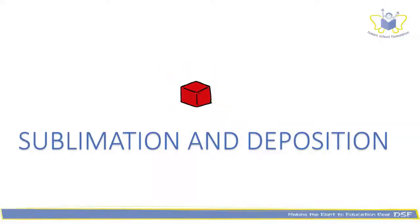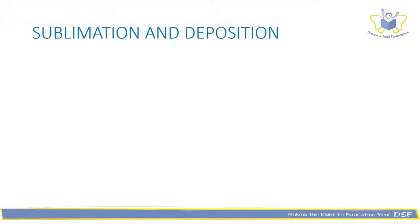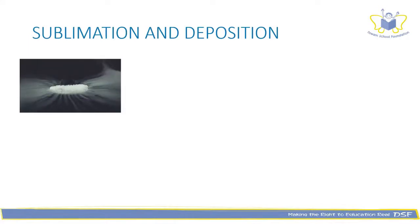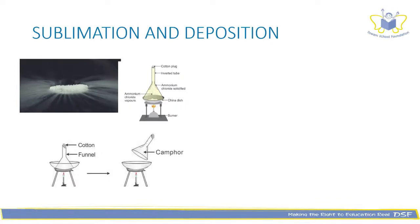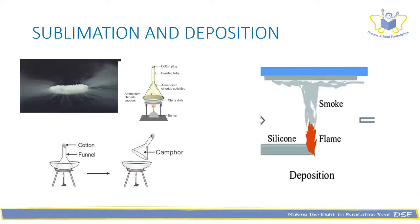Now it is time for sublimation and deposition. Here are some examples for sublimation: dry ice or solid carbon dioxide, ammonium chloride, and camphor. Similar to other processes, the increase in temperature brings about a change in state of all these substances. What is so special? Most solids become liquids before becoming gases, but these directly shift to gases. The reverse of this is also possible and is called deposition — the best example being soot deposited over a cooler surface when you burn something.